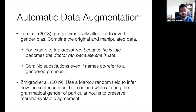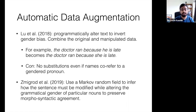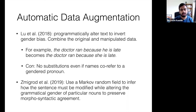There was another paper from Zmikrod that described a data augmentation approach for mitigating gender stereotypes associated with animate nouns for morphologically rich languages like Spanish and Hebrew. They used a Markov random field to infer how the sentence must be modified while altering the grammatical gender of particular nouns to preserve morphosyntactic agreement.